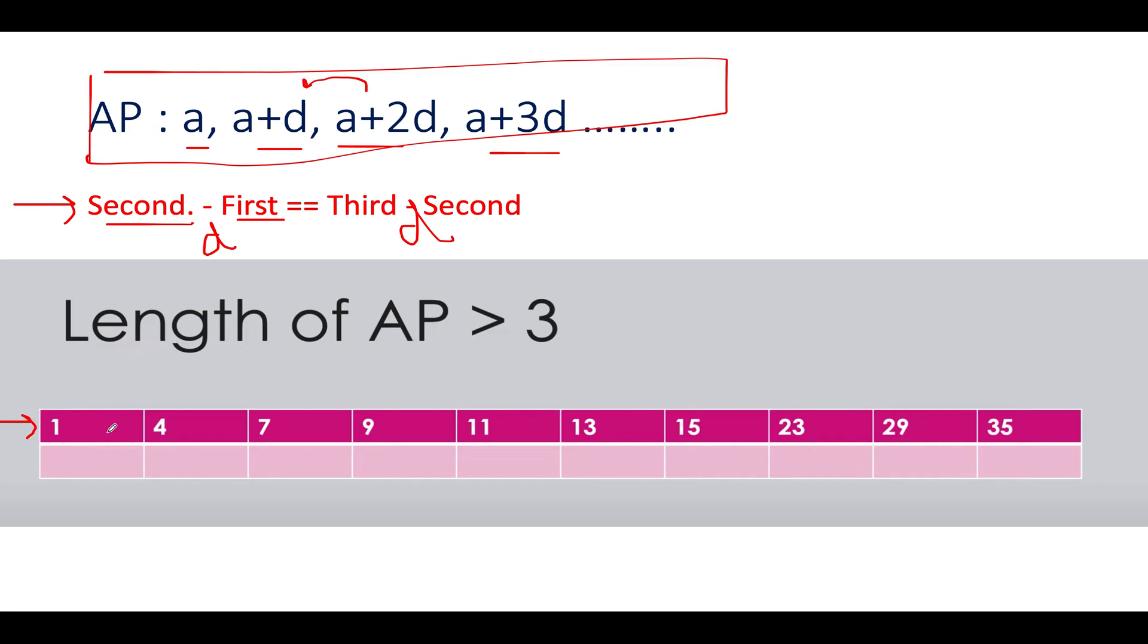I have taken a slightly longer case here so you get a good hold of the concept. We have an array: [1,4,7,9,11,13,15,23,29,35]. In the question, it is given that the length of the AP should be greater than or equal to three. We'll start from the first three elements which are 1, 4, and 7. What is 4 minus 1? Three. Seven minus 4 is again three. We identified our first AP progression ending at 7, so let's write 1 here. Since the length is less than three before this, we write zero, zero. So far we have identified one progression: [1,4,7].